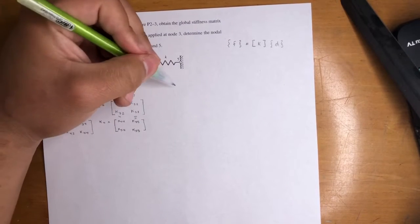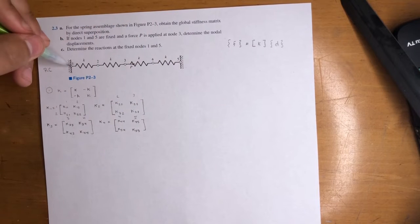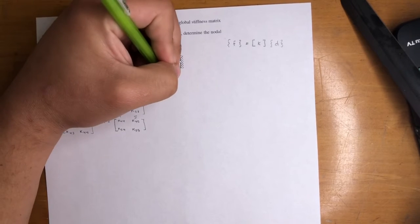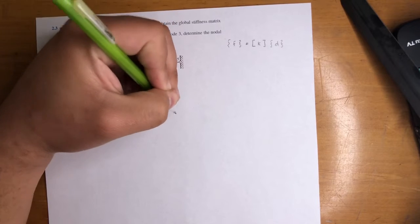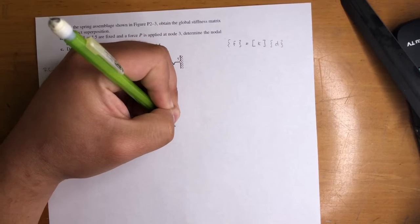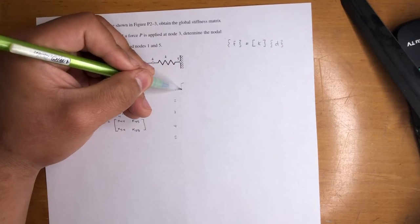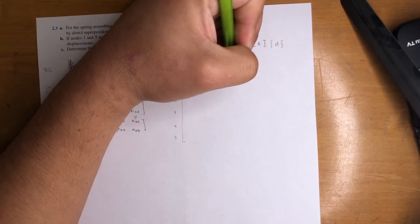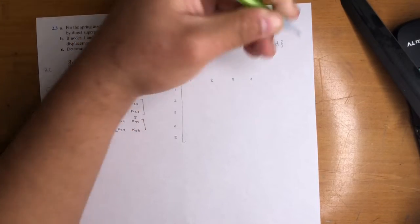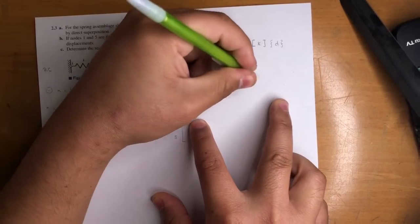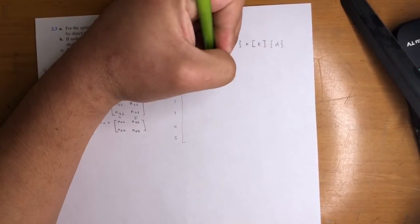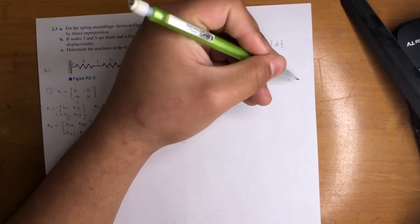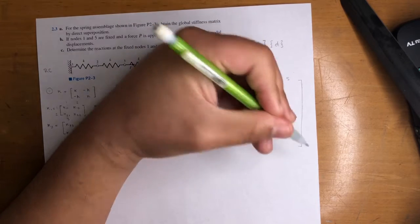Alright, so check this out. This is going to be our global stiffness matrix. It's going to be a 5 by 5 because we have 5 nodes. Again, it's not number of springs, it's number of nodes. Let's go ahead and do that. Let's go ahead and label it 1, 2, 3, 4, 5. So this is going to be the matrix. And it's going to be 1, 2, 3, 4, let me space it out a little bit more.